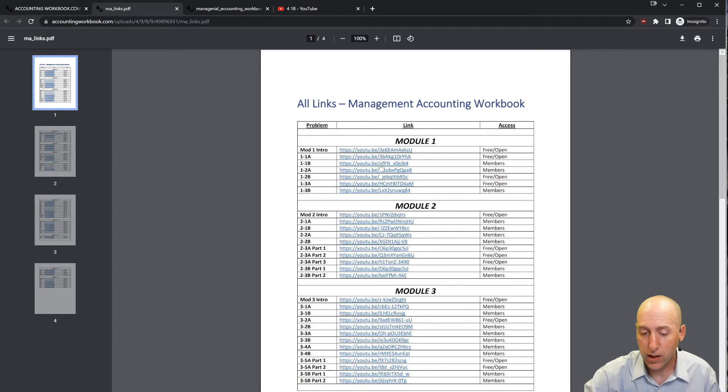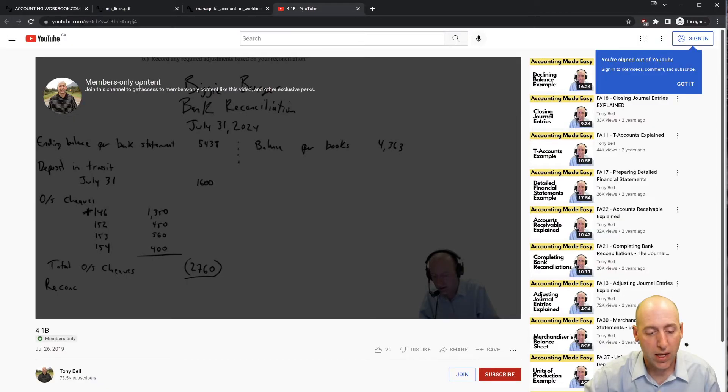If you click one of the members links, it'll take you to a page that looks like this as members only content. If you'd like access to that content, just hit the join button. Okay, let's jump into the problem.